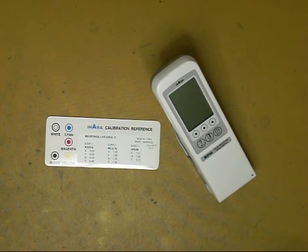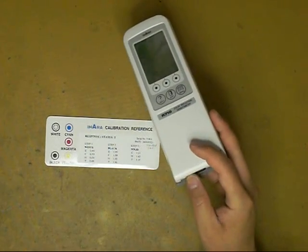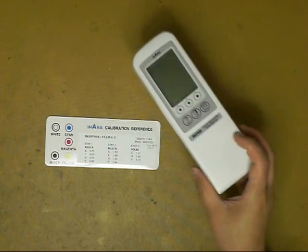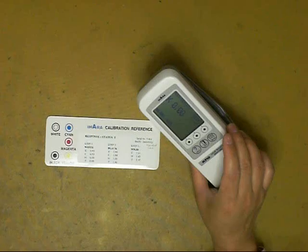This tutorial illustrates the Ihara R710 calibration step. First, slide the on-off switch to the on position. Press any button to turn on the instrument.